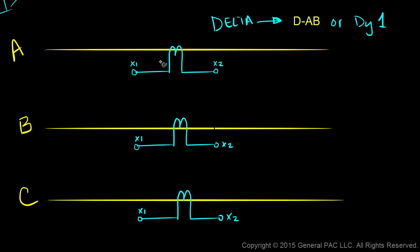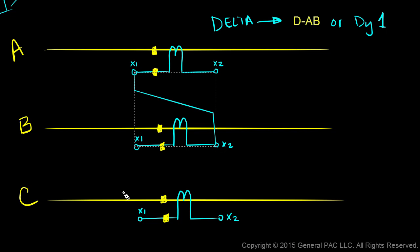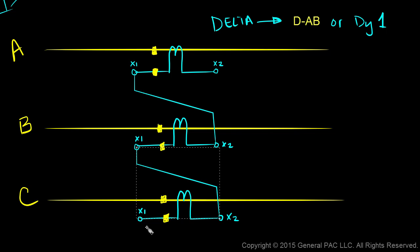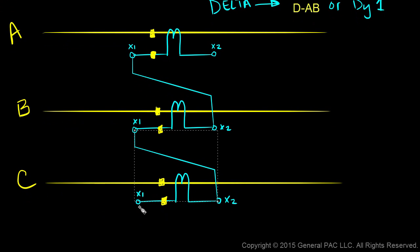Before showing how the Delta is connected, let's define the polarity marks — I'll assume the polarity marks are on this side. To connect the 3 CTs in Delta: we take the polarity side of Phase A CT and connect it to the non-polarity side of Phase B CT. Similarly, we take the polarity side of Phase B CT and connect it to the non-polarity side of Phase C CT. And lastly, the polarity side of Phase C CT connects to the non-polarity side of Phase A CT.